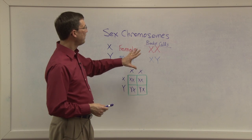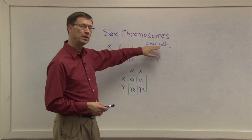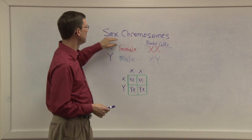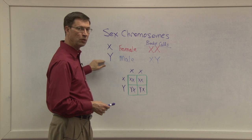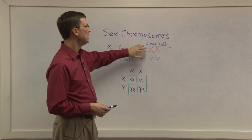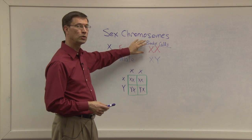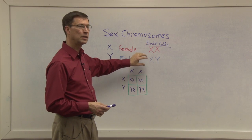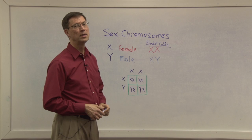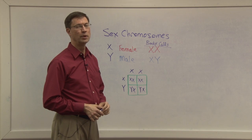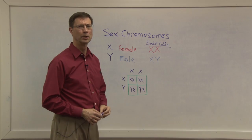So again, just to wrap it up, distinguish in your mind the difference between the sex chromosomes, which is X for female, Y for male, and then the body cells, which is the homozygous XX determines that it's a girl, heterozygous X and Y together determines that the offspring will be a boy. I hope that clears it up for you a little bit.